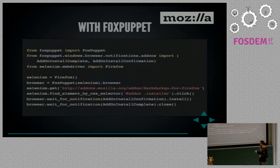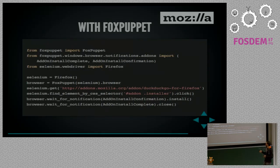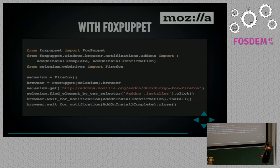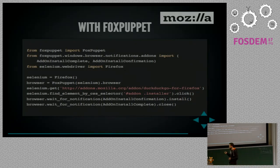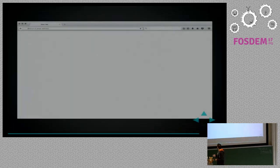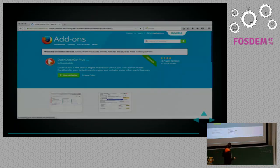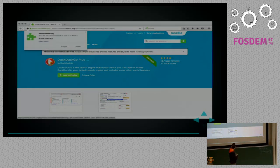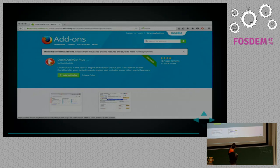Here's the same thing with FoxPuppet. We create a FoxPuppet instance with a browser property representing our initial browser window. We use Selenium to open a web page in content space, find and click the install button. Then just two lines with FoxPuppet: we tell the browser to wait for the expected notification and call the install method, then wait for the add-on install complete notification and click close. Here's a short video showing that happening — slowed down. We click the install button, wait for the notification, click install, wait for the next notification, and click close.